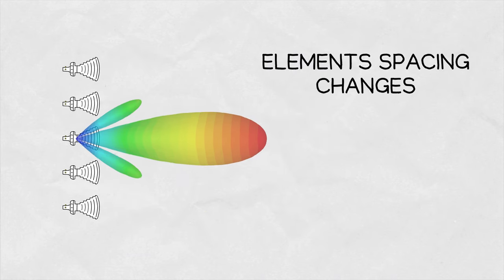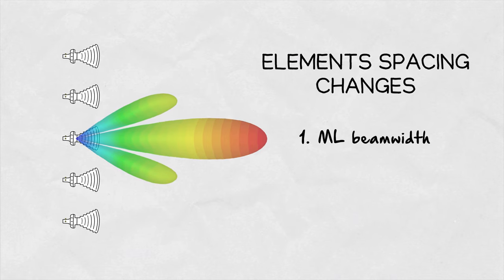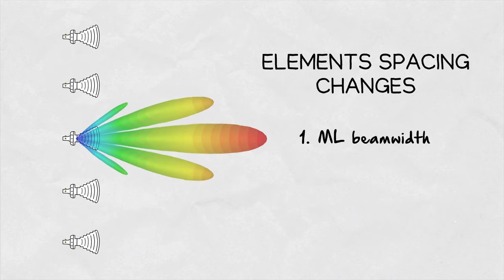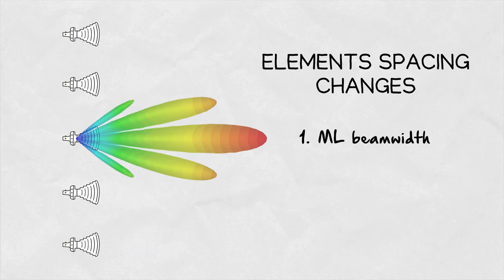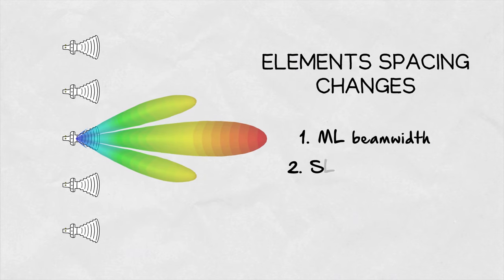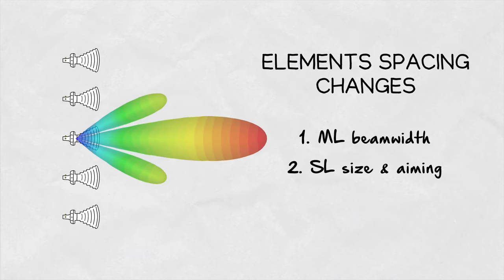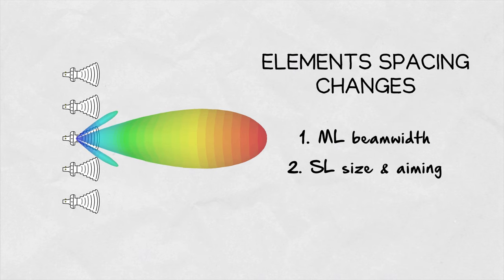The spacing between the array elements determines the beam width of the main lobe. The further apart they are, the larger the physical size of the array, effectively decreasing the beam width. Also, the angles and the size of the side lobes change with the element spacing, because the fields add up differently for different antenna spacing.